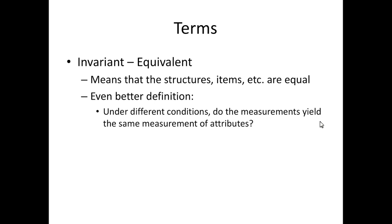A quick set of new terms for this section: we're going to use the term invariant and invariance a lot, and really what that means is equivalent — they don't vary in different situations. So the structure, the items, the means, the intercepts are all going to be equal, hopefully, if this works. A better definition of invariant is: under different conditions, do those measurements yield the same measurement of attributes.